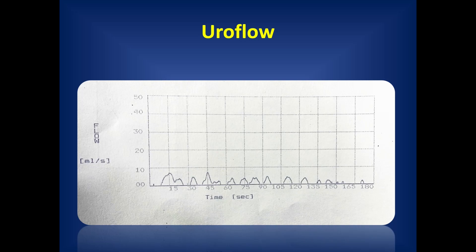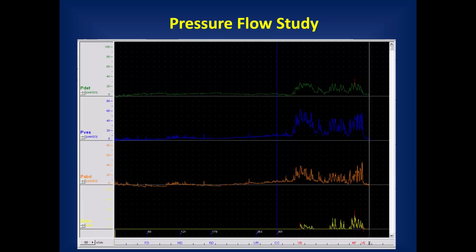The uroflowmetry in these patients looks something like this: the patient is voiding intermittently in small spurts with abdominal straining — bit by bit he voids and tries to empty himself. When you do a pressure-flow study, you get a curve where the pdet maximum is below 10–15 cmH₂O and his flow is not good, so it is a low-pressure, low-flow diagnosis.